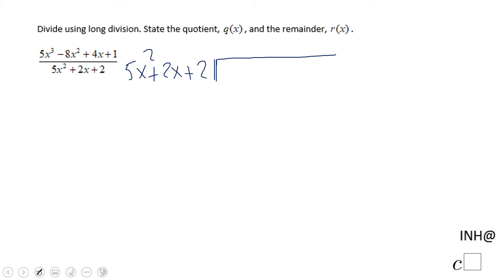We have to divide 5x cubed minus 8x squared plus 4x plus 1 by 5x squared plus 2x plus 2. And we are going to use a guess and check strategy.